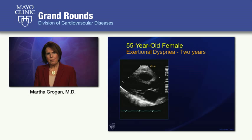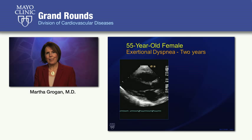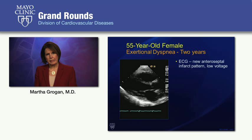Here's a patient who presented at age 55 with exertional dyspnea for two years. She has cardiac amyloidosis, but her echo doesn't look like typical cardiac amyloidosis — wall thicknesses are normal, she has reduced left ventricular ejection fraction, and right ventricular wall thickness was normal. Her ECG showed a new pseudo-infarct pattern, an anteroseptal infarct pattern, with no regional wall motion abnormalities on echo, and she had new low voltage.